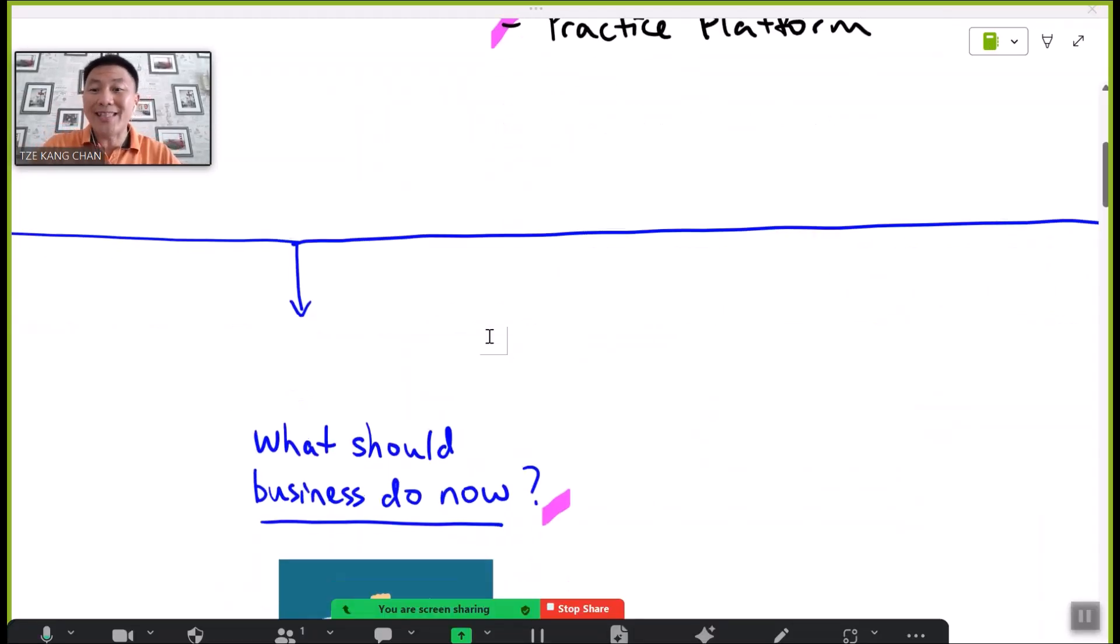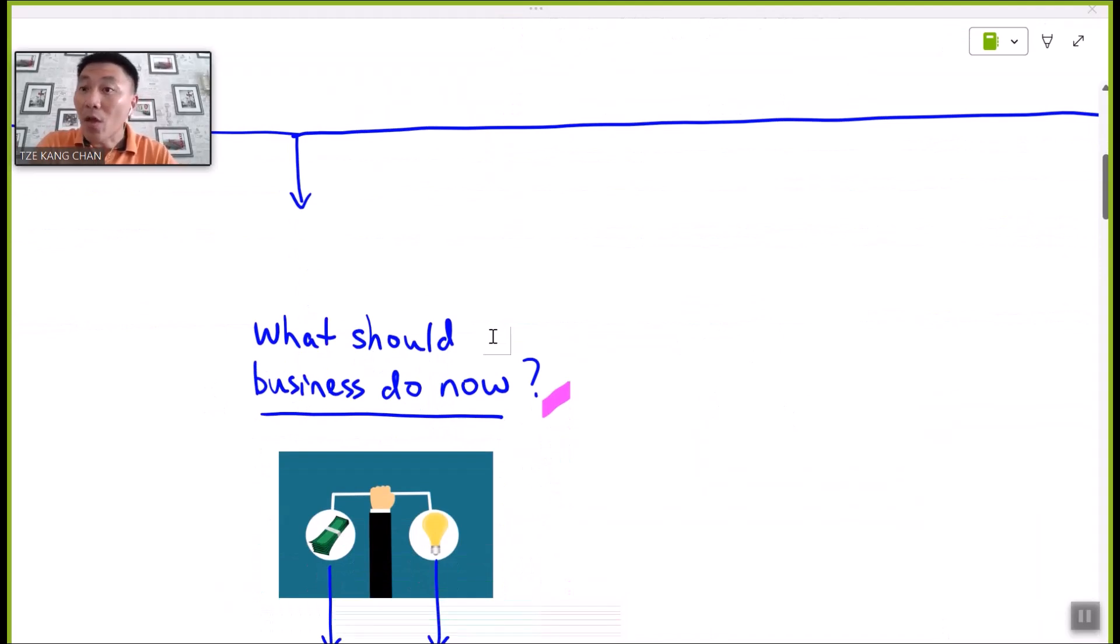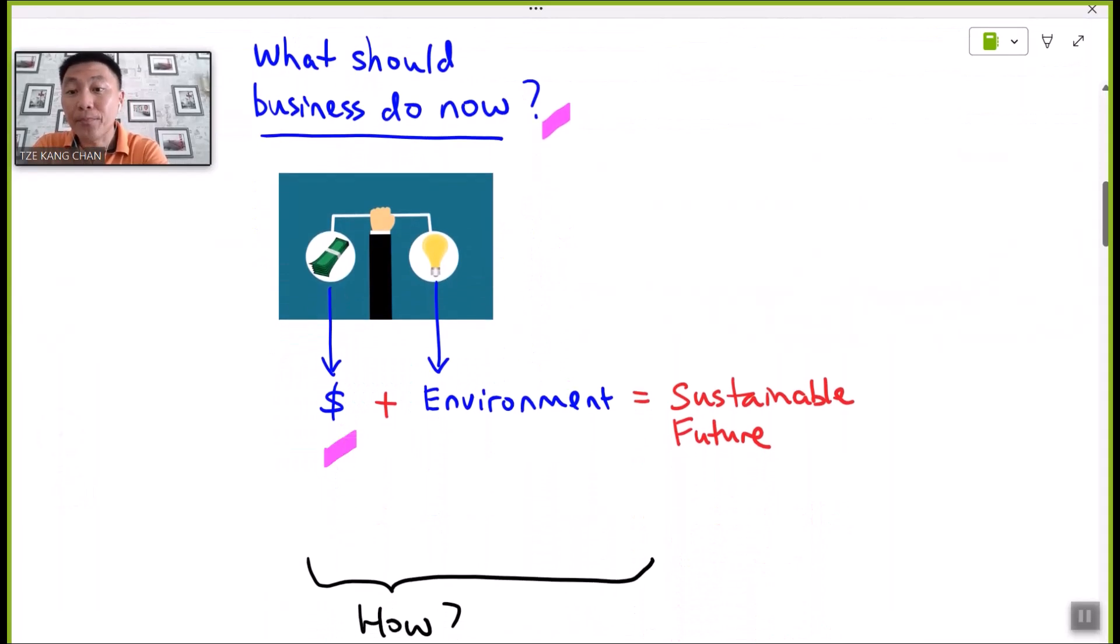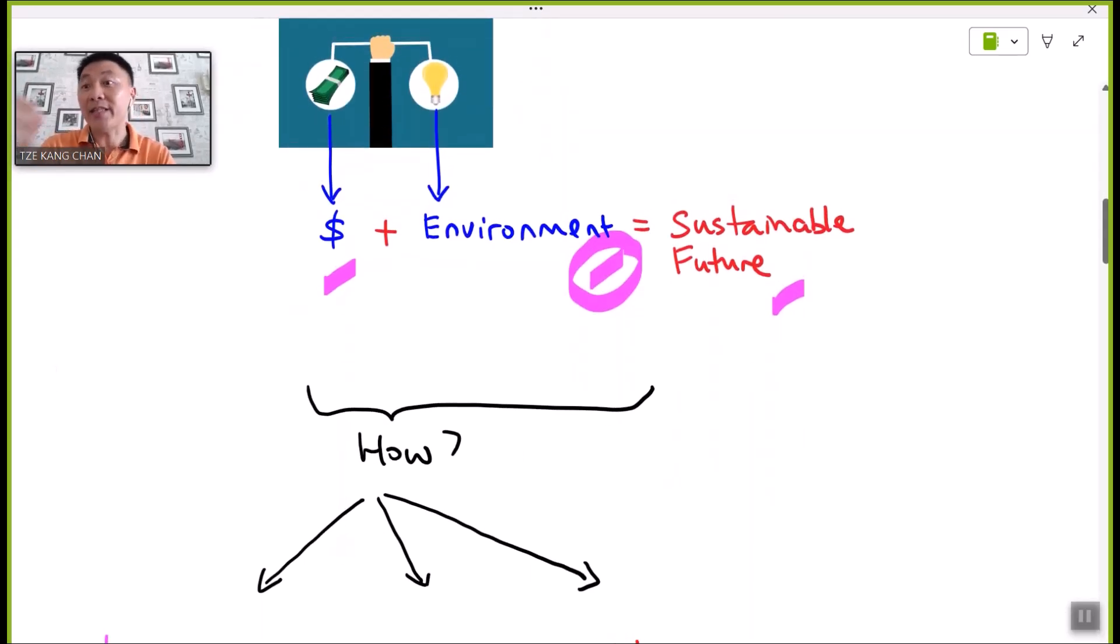With such deficiency, what should the business do? In order to strike a balance in the long term, not only to take care and safeguard the financial objectives of the firm, but also to safeguard the living environment and ensure a sustainable future of the planet. How are we going to do that? That is obviously the key question of modern businesses nowadays.